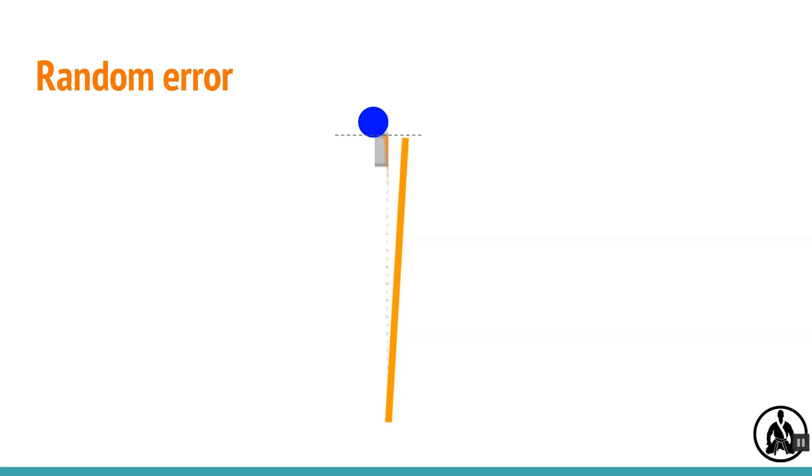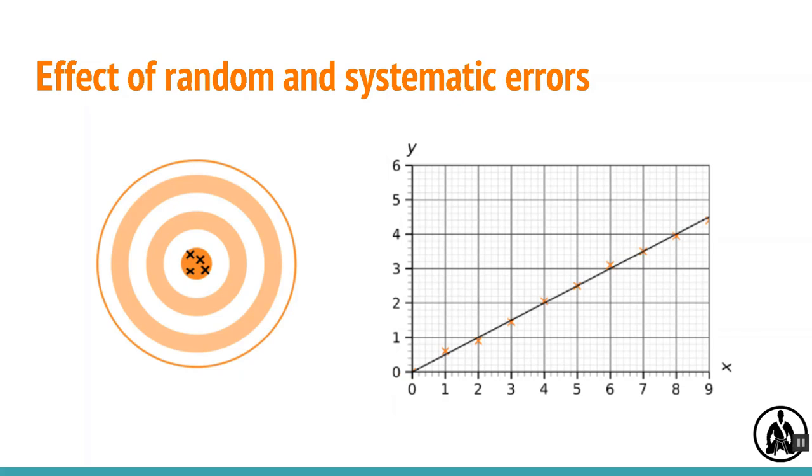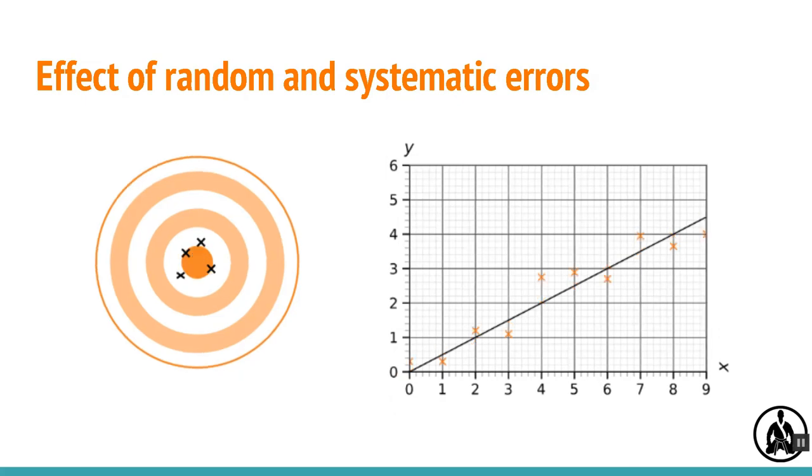Why distinguish between the two types? Because they affect our results in different ways. Random error causes some measurements to be too big and some too small, so it spreads out repeats, making them less precise and increases scatter on our graphs.